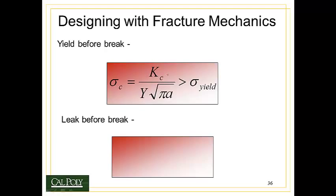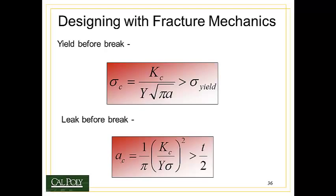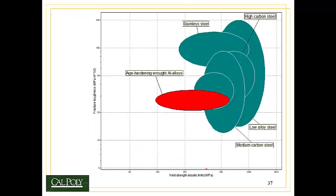In yield before break design, the critical crack stress must be greater than the yield strength of the material. We plug in the fracture toughness, the geometry correction factor Y, and the crack size A. For leak before break, the critical crack size equals (1/π)(K_C / (Y·σ))² and must be greater than or equal to one half of the wall thickness.